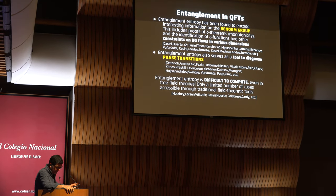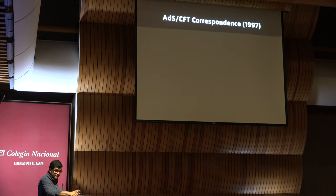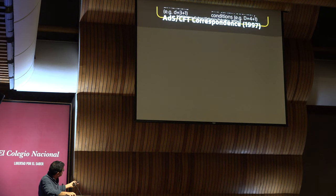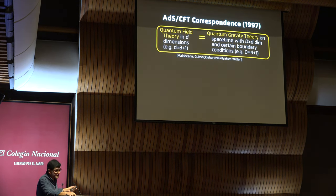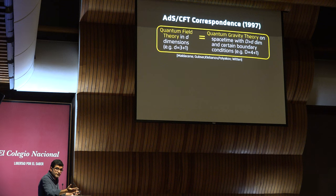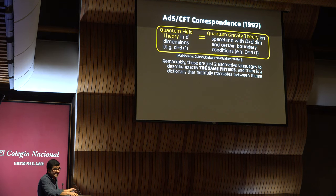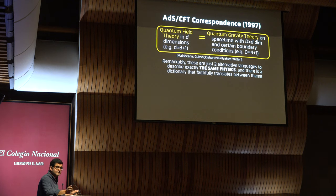Because of that difficulty, we searched for new tools — and I'm going to remind you about a tool we've had now for 20 years, known as the ADS-CFT correspondence. The general statement is that a quantum field theory in a certain number of spacetime dimensions — say 3+1 — can be equivalent to a quantum gravity theory on a spacetime with at least one more dimension. The ADS-CFT correspondence is the remarkable statement that these two apparently drastically different theories are in fact just alternative languages to describe exactly the same physics. There is a dictionary that faithfully translates from one language to the other and back.